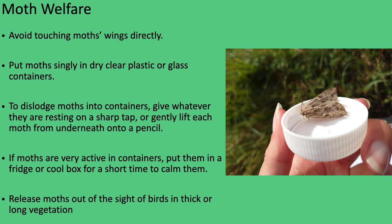If you decide to put moths into pots for closer identification, avoid touching their wings as they can be easily damaged. To dislodge moths into containers, give whatever they're on a sharp tap or gently lift each moth from underneath onto a pencil. Make sure pots are dry and clean, only put one moth in each pot, and check it can move around freely. If moths are really active in containers, you can put them in a fridge or cool box for a short time, which just calms them. Moths can be kept for a day or two in a container in the fridge while you identify them. When releasing moths, do it out of sight of birds in thick or long vegetation, ideally at dusk, and regularly change your moth release site.